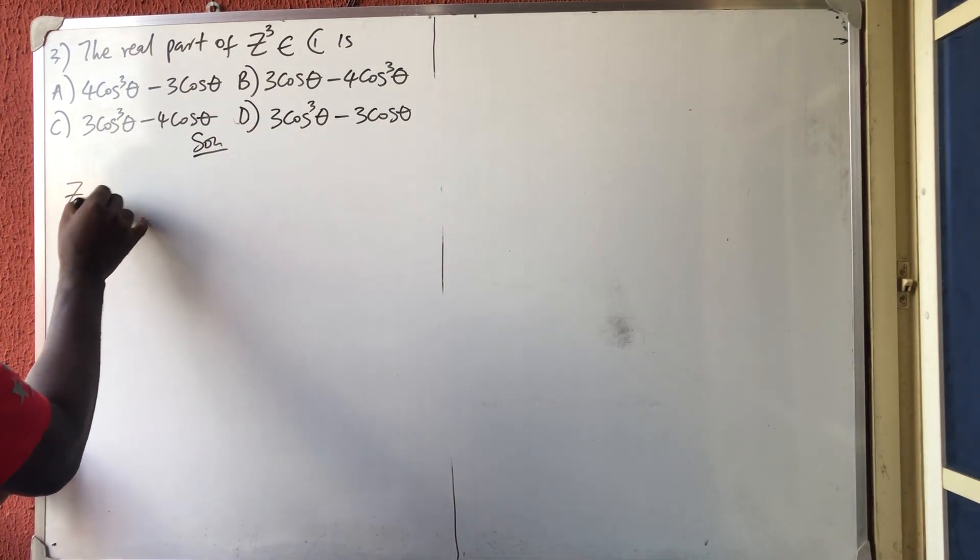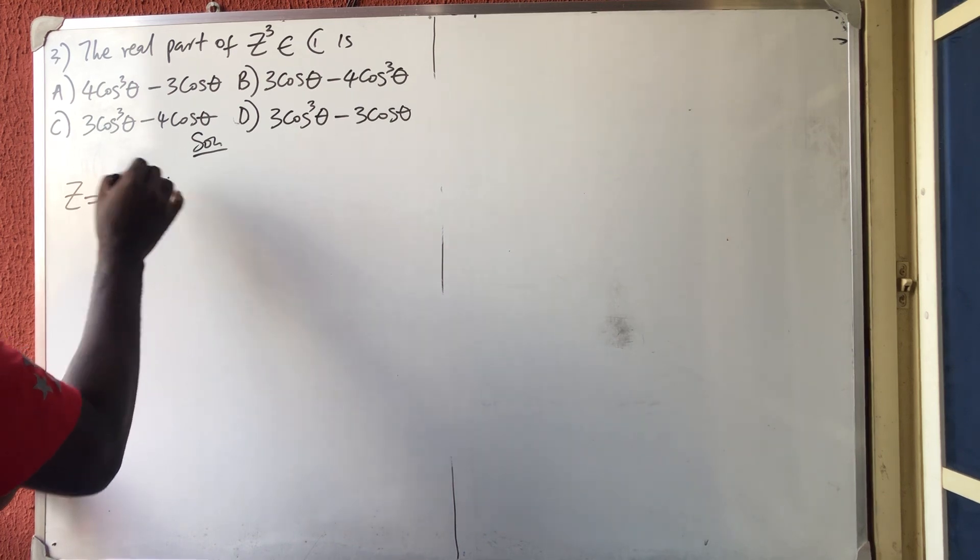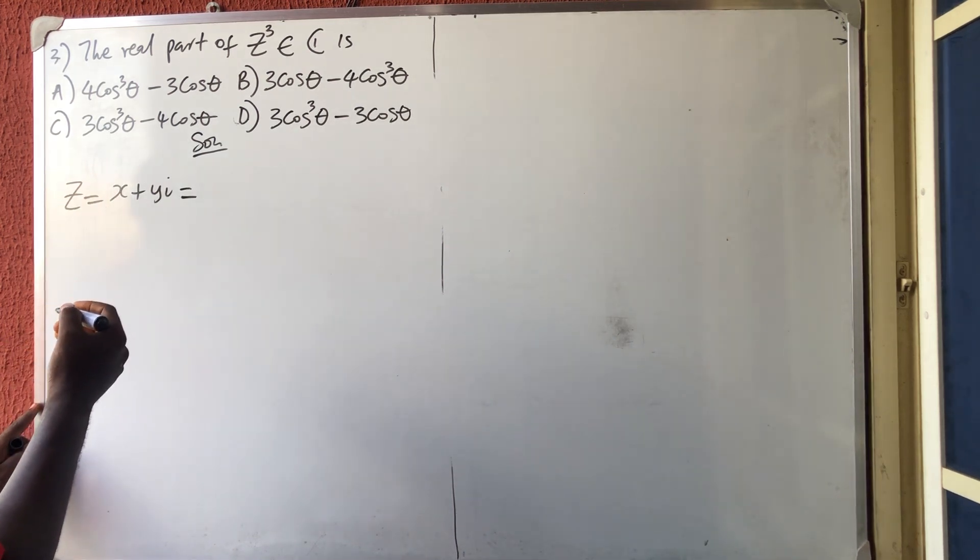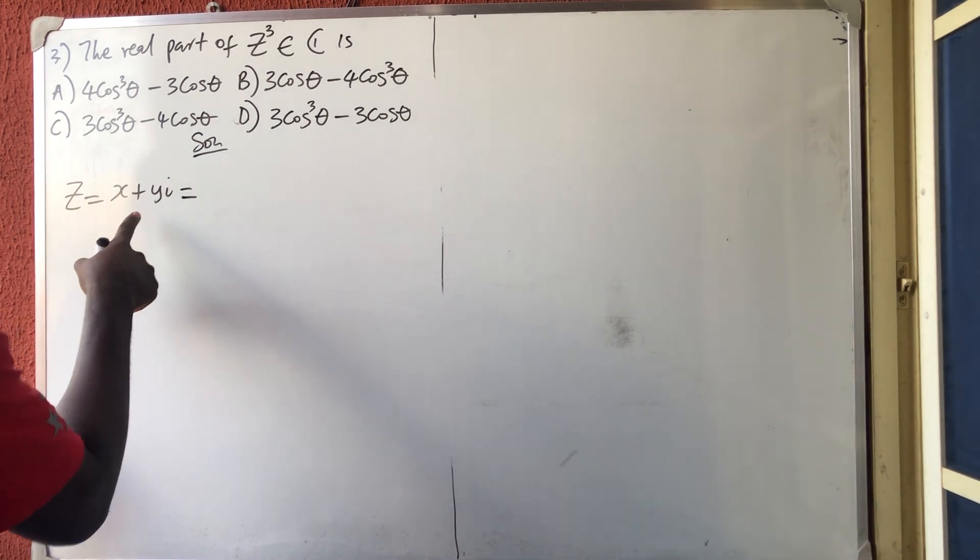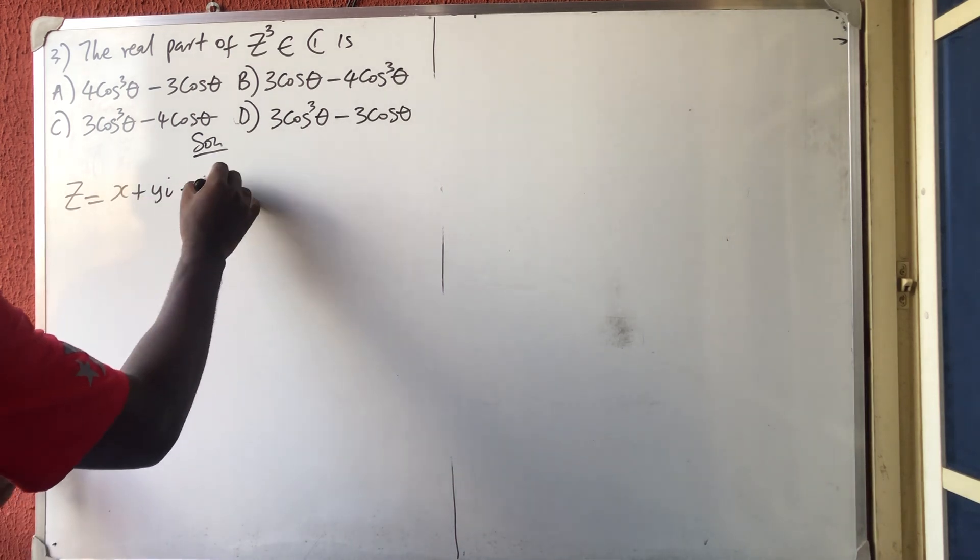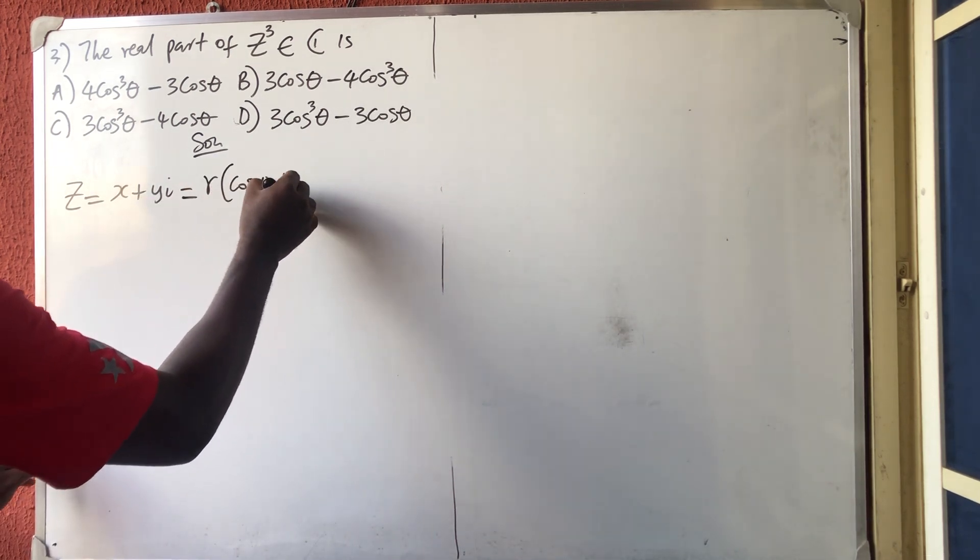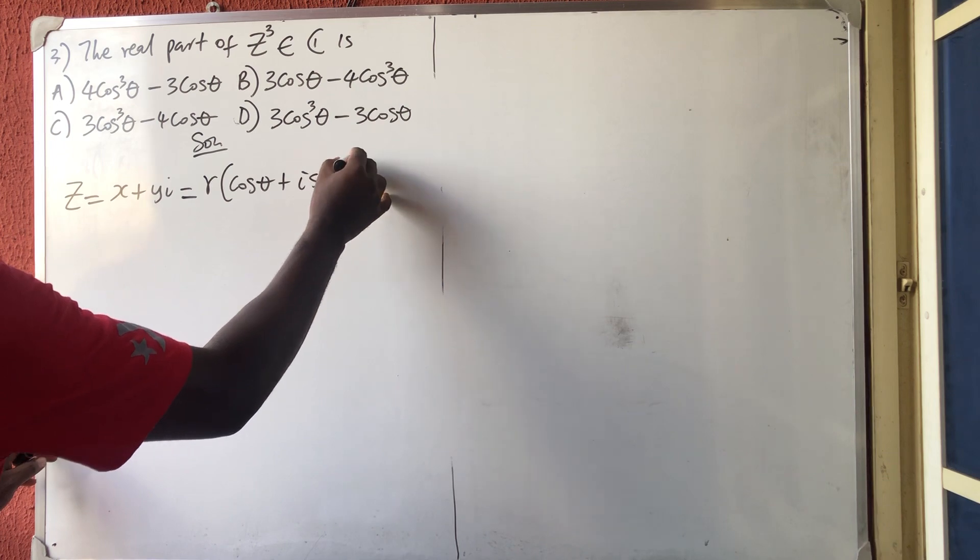Now, we know that a complex number is given by X plus Yi, or if you want to put it in Cartesian form. If you want to put it in polar form, you're going to have R in bracket of cos theta plus i sine theta.